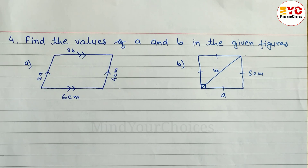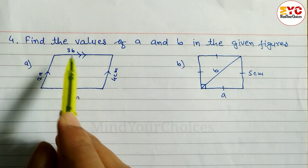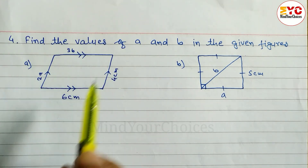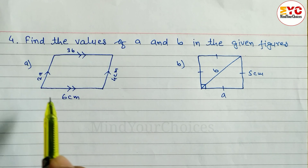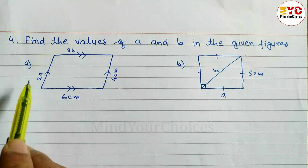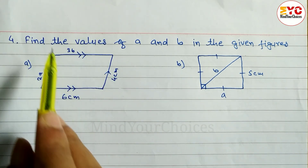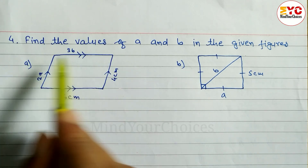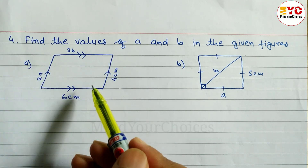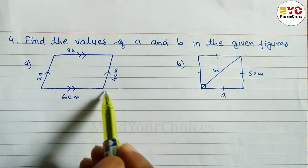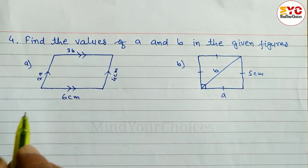This question is taken from Class 8 geometric parallelograms, and here we have to learn how to find out the value of a and b. In a parallelogram, opposite sides are equal — this side and this side are equal, and this side and this side are equal. If ABCD is not given, you can write it yourself, or without writing ABCD you can do it directly.